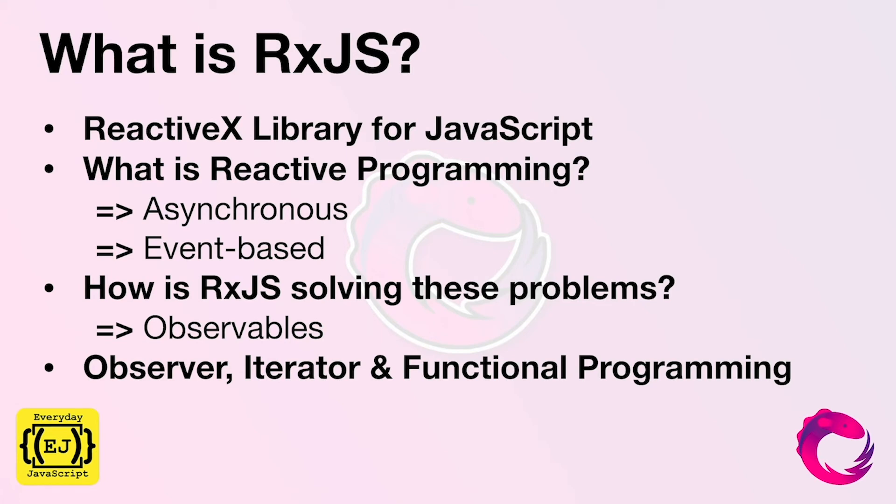How is RxJS solving these problems? By using observables. RxJS is a combination of observer pattern programming, iterator programming, and functional programming.